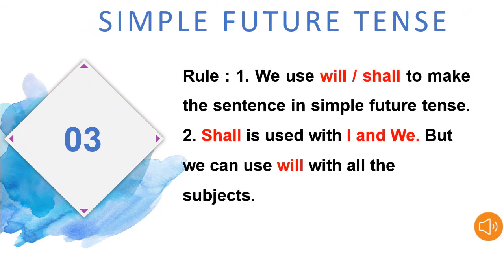Coming to the third topic, simple future tense. Let's see the rules. We use will or shall to make a sentence in simple future tense. Shall is used with I and we, but we can use will with all subjects.